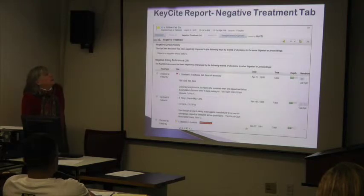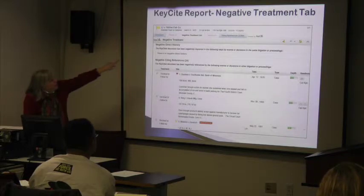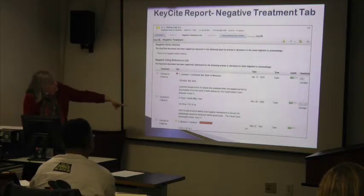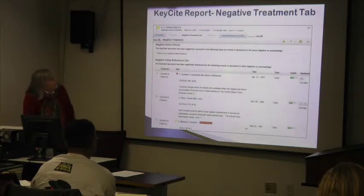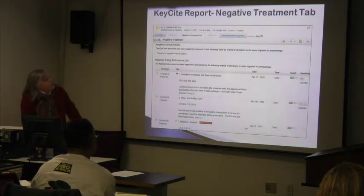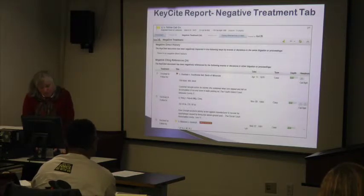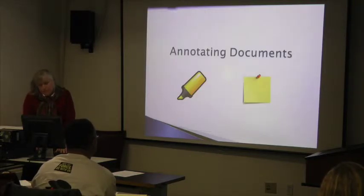The Keysight report has a negative treatment tab. Click on negative treatment and it will bring up the cases that do not support your case. With potentially 3,000 to 3,600 citing references, the negative treatment tab is a good way to cut through and see what your status is as of this moment.